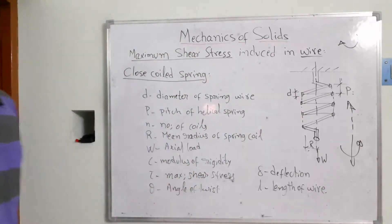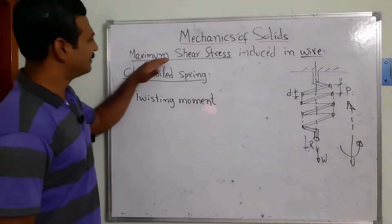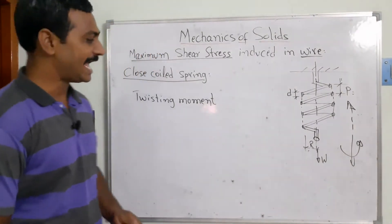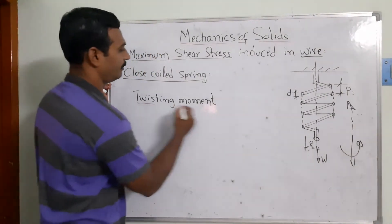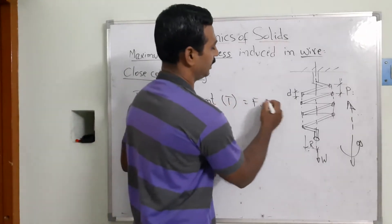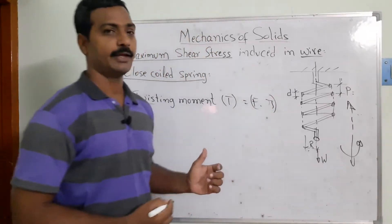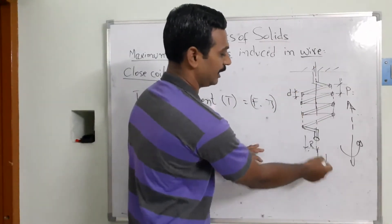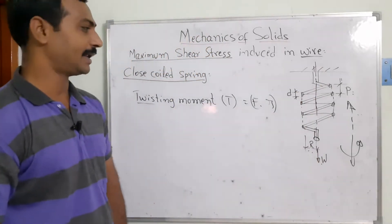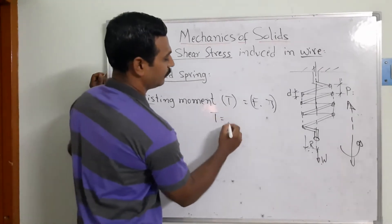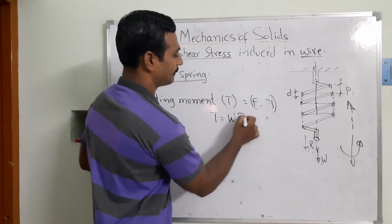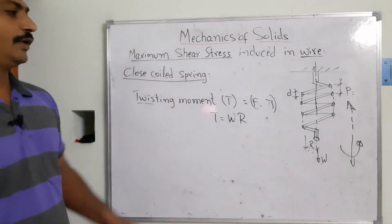We need to calculate the maximum shear stress developing inside the member when it is subjected to load. The twisting moment T is found as T = W × R, where W is the load acting on the member and R is the mean radius of the spring — that is, the distance from the central axis to the outermost layer.